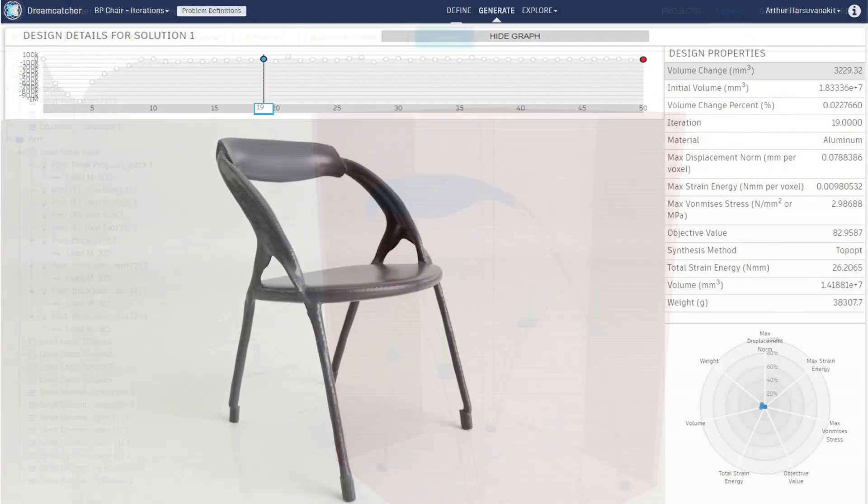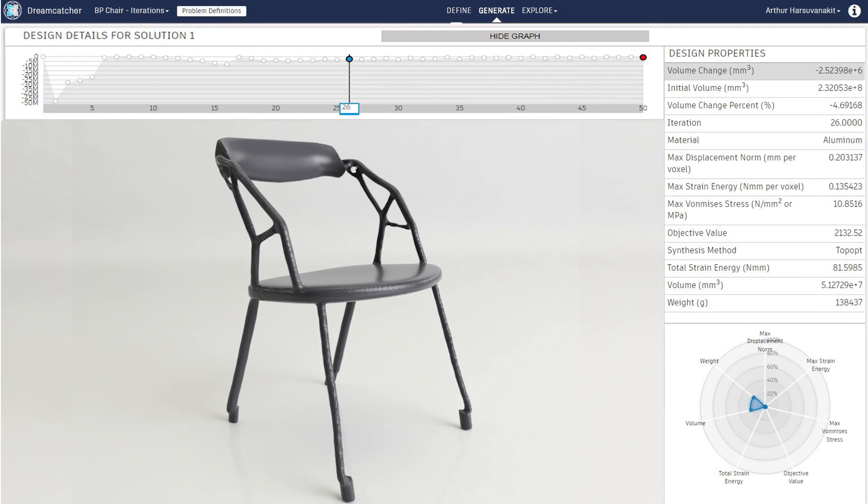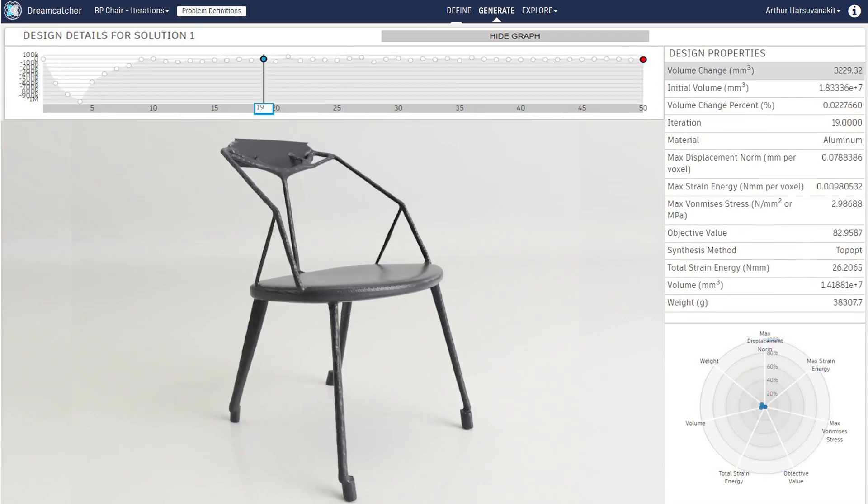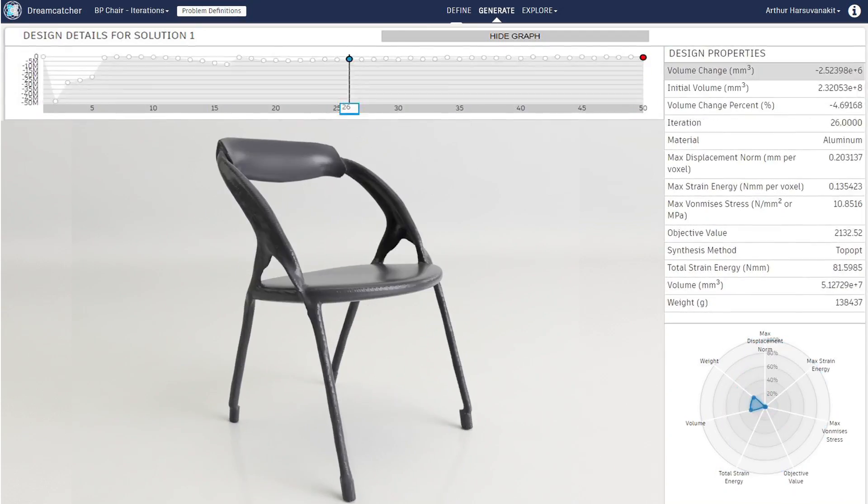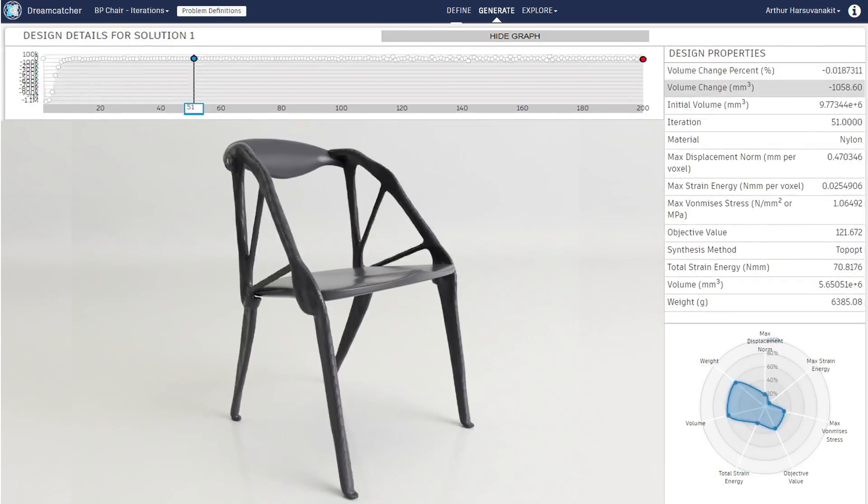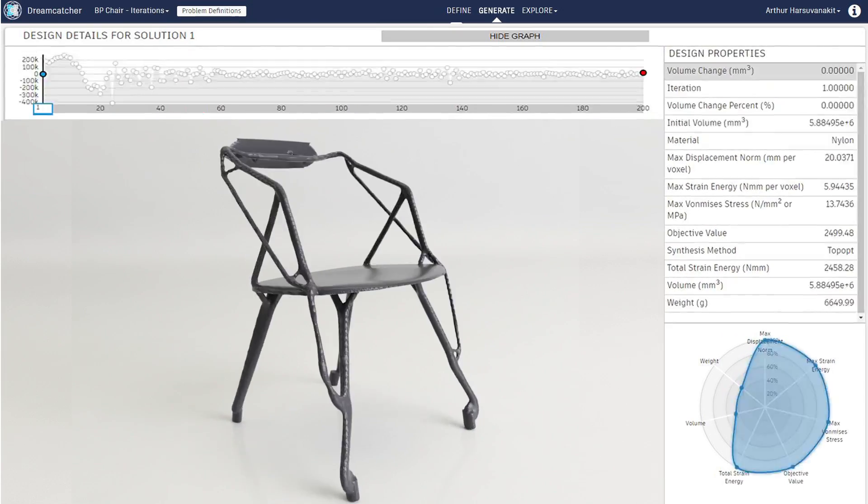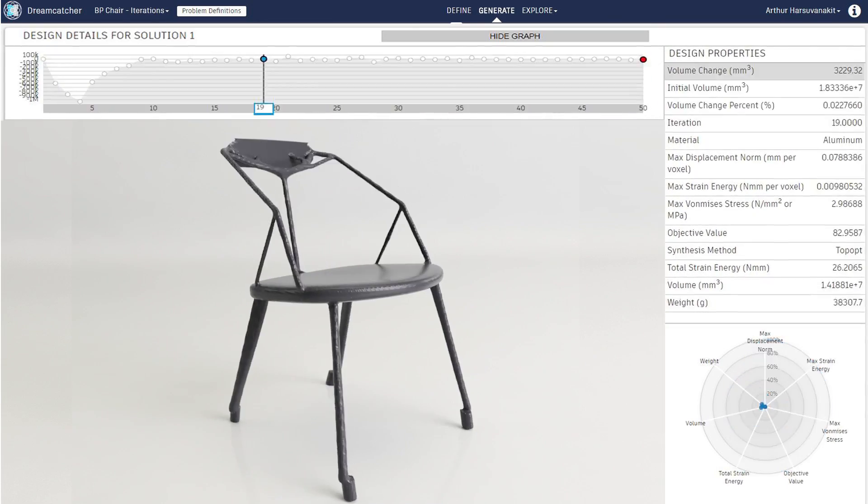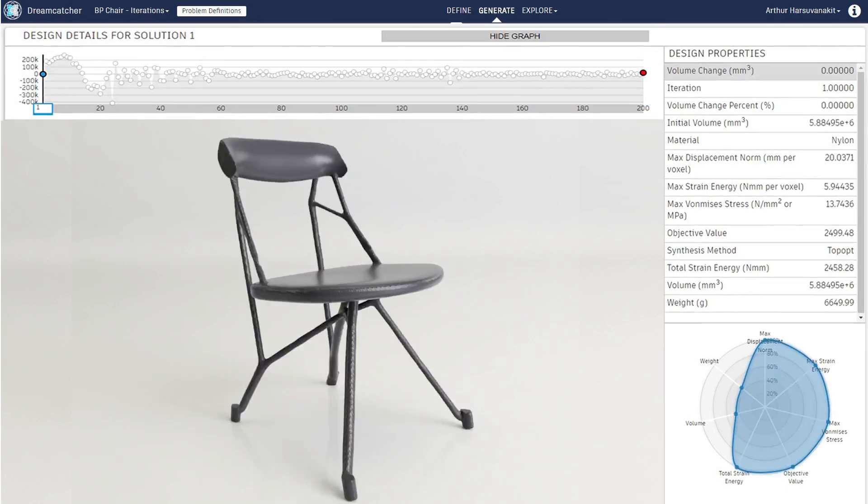With those inputs, the algorithm explored the space. She said she wanted it to be in aluminum or nylon. It looked at solutions there. And it generated not one, not two, but hundreds of solutions, all that satisfied those goals and constraints.